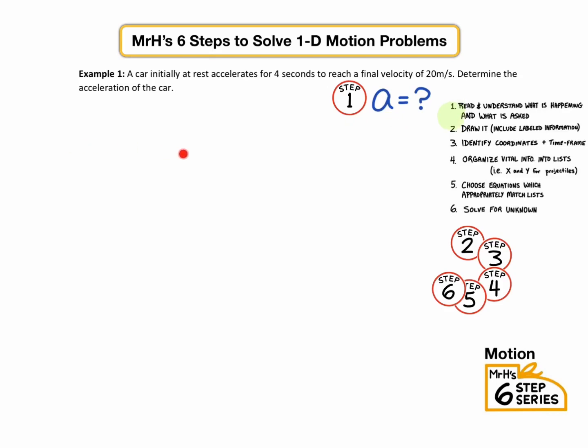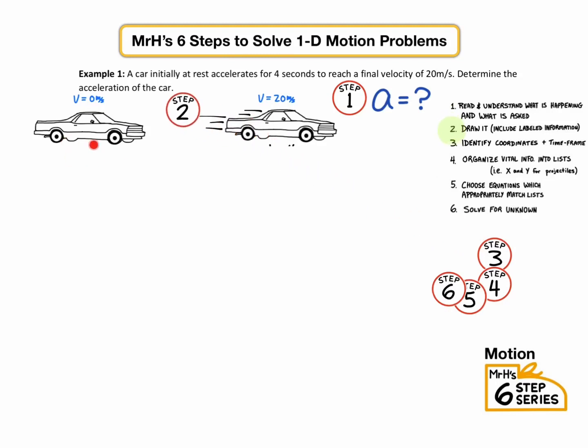Step two is to draw a picture. So draw a picture of a car that looks at rest, and then it speeds up to 20 meters per second. Step three is to identify coordinates and time frame. So in this case, I like to start with time equals zero and position equals zero, and then the final position was four seconds later, so we'll just label the positions and the times for step three.